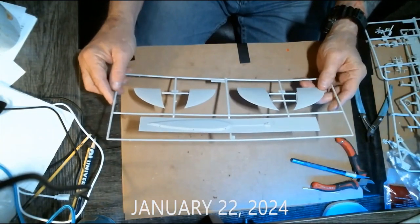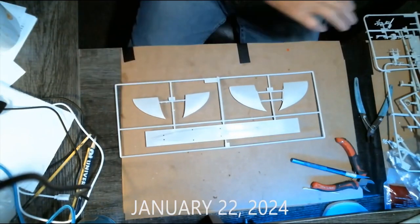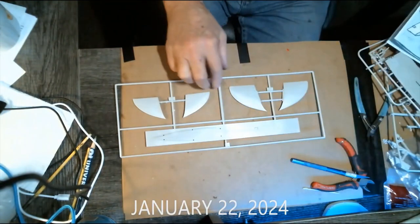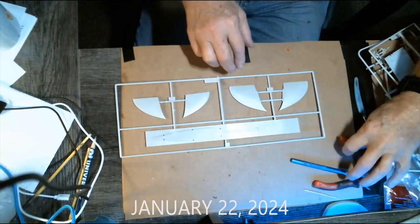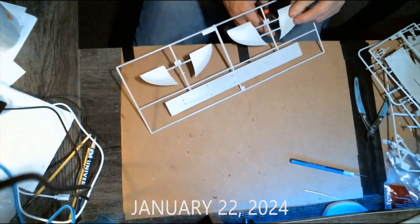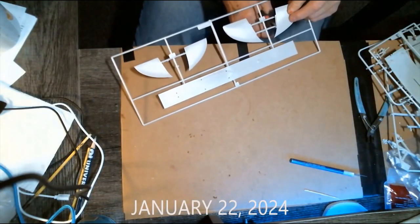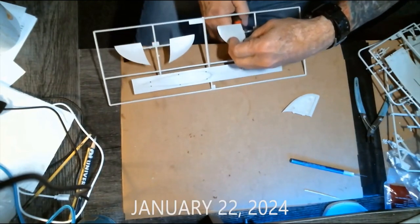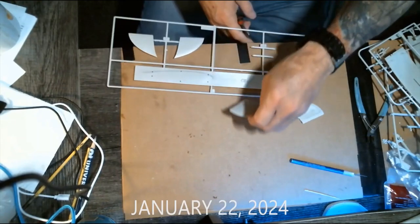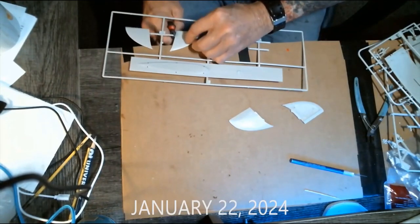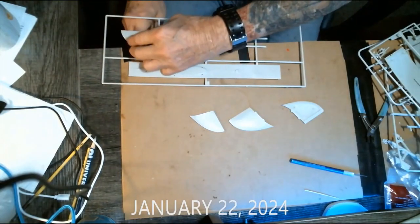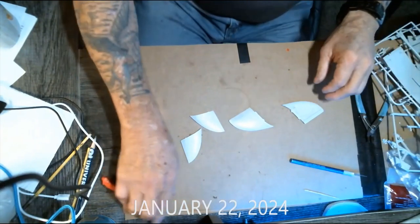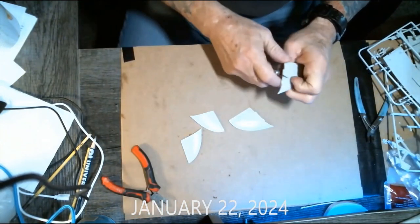The first thing I'm going to do is the flaps that go along the side of the conning tower. We start by getting them off the tree and snipping them off, which is a pretty simple process.